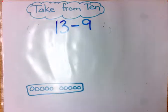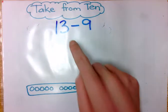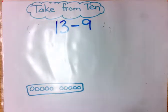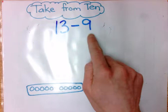When subtracting larger single-digit numbers from teen numbers or even larger numbers, sometimes it's easiest to take from the 10 instead of counting back. Starting at 13 and counting back 9 would take a long time.